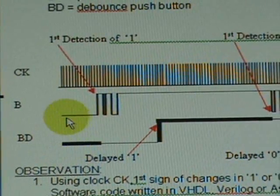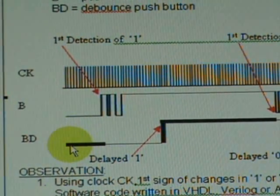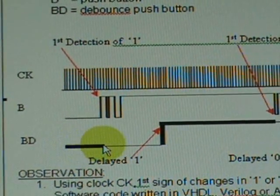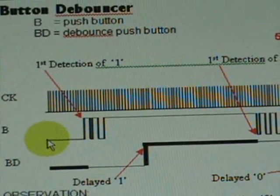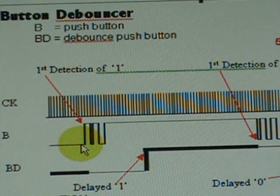So the job is to produce a debounce signal BD shown here in boldface line, normally low, representing the B before it got pushed.